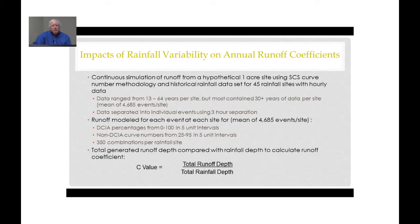The data were separated into individual events using a three-hour separation. The modeling was conducted for DCIA percentages ranging from 0 to 100 in five-unit intervals, and for non-DCIA curve numbers from 25 to 95 in five-unit intervals. That resulted in 350 combinations per rainfall site, and this calculation was conducted for each rain event at each of the 45 hourly monitoring sites for each of these 350 combinations.